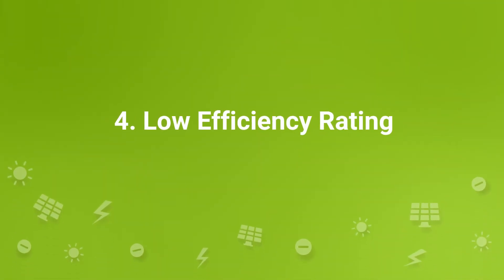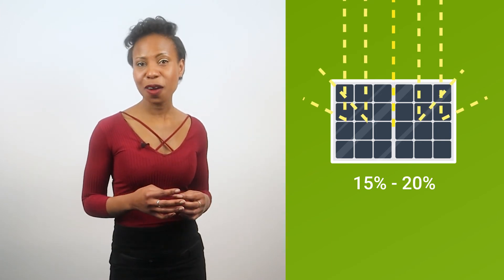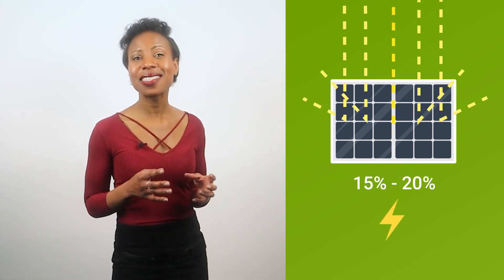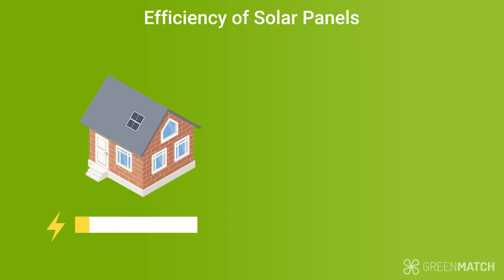Low Efficiency Rating. Currently, an average solar panel efficiency rating is between 15 to 20%, meaning that 80% of the solar energy hitting the panels is not being converted into electricity. The result is that houses with very small roofs may not be able to have a large enough array to generate sufficient electricity.